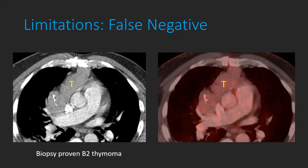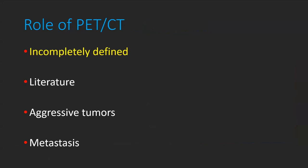Conversely, PET CT can also have false negative results — when the scan is negative but malignancy is actually present. There are technical factors that can cause false negatives, but specifically with thymic tumors, some low-grade tumors are simply not FDG avid. For example, a biopsy-proven B2 thymoma may show essentially no FDG uptake, which is why tissue diagnosis is so important. We must be very careful using PET CT in thymic imaging given these multiple false positive and false negative scenarios.